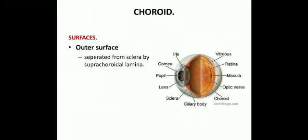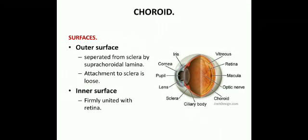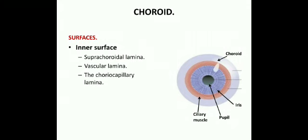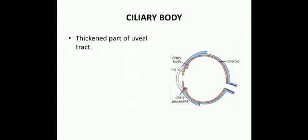The choroid has two surfaces. The outer surface is separated from the sclera by the suprachoroidal lamina, and the attachment to the sclera is loose so it can be stripped off easily. The inner surface is firmly united with the retina through the suprachoroidal lamina, vascular lamina, the choriocapillary lamina, and the inner basal lamina or membrana of Bruch.